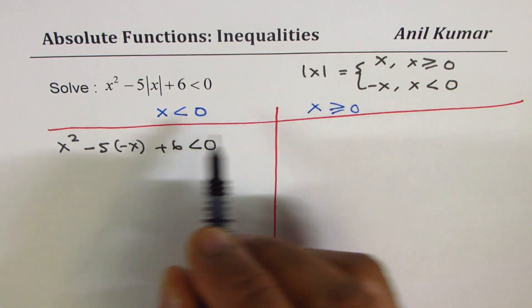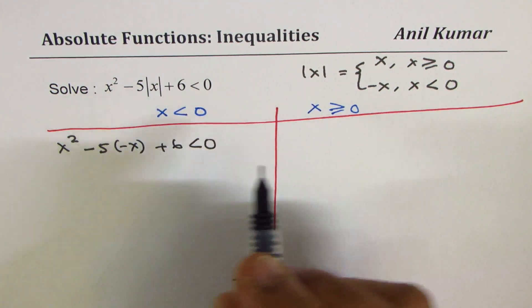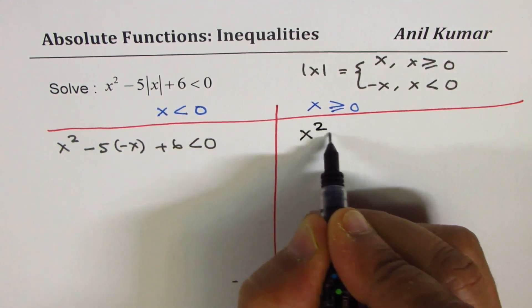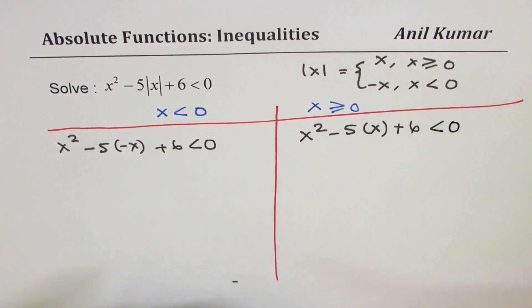But when x is greater than equal to zero, we will take the absolute value of x as positive x. So it is going to be x squared minus 5x plus 6 less than zero.